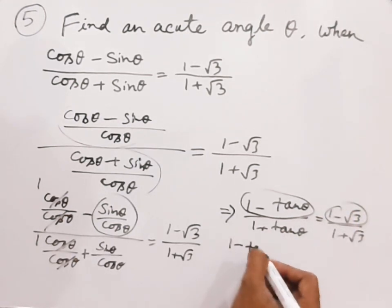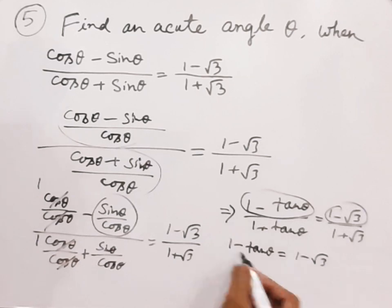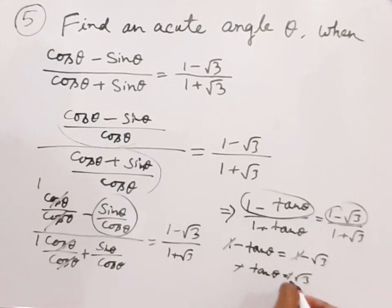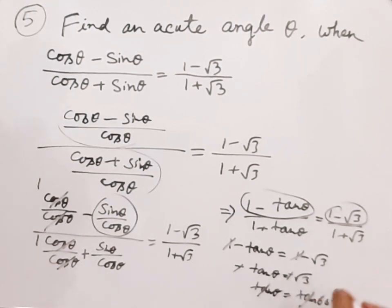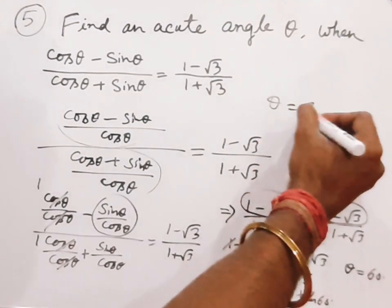So therefore 1 minus tan θ equals 1 minus √3. Cancelling the 1s, minus tan θ equals minus √3, so tan θ equals √3, which is the value of tan 60°. Cancelling tan on both sides, therefore θ equals 60 degrees.